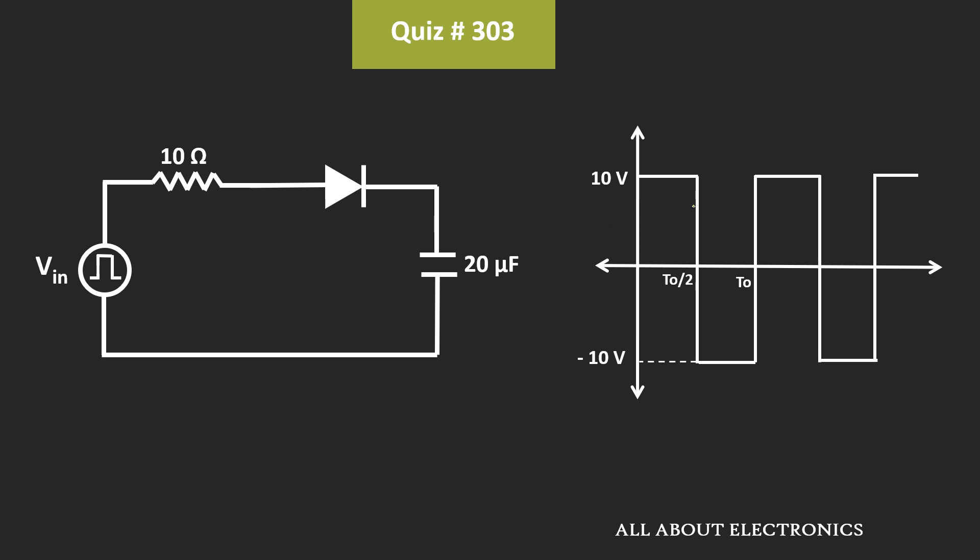So during the positive half cycle, when the 10V is appearing as an input, then this diode will conduct. Because at that time, the voltage at the anode is equal to 10V, while the voltage at the cathode is equal to 0V. So in this condition, this diode will act as a short circuit, and through this path, the capacitor will start charging.